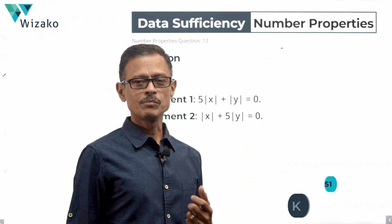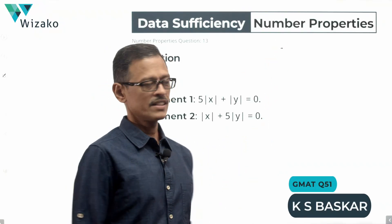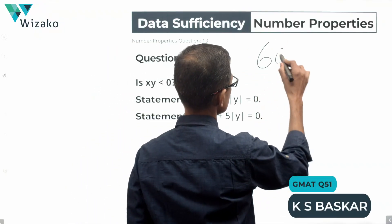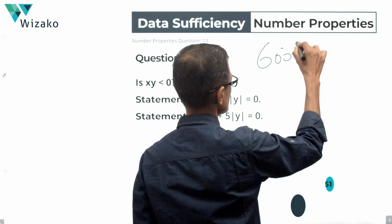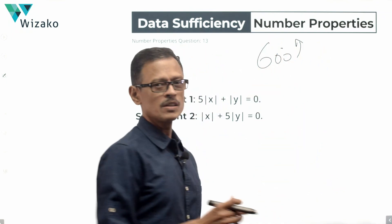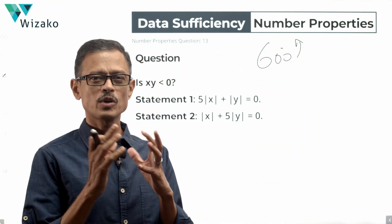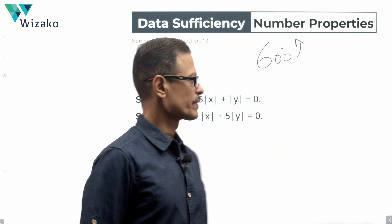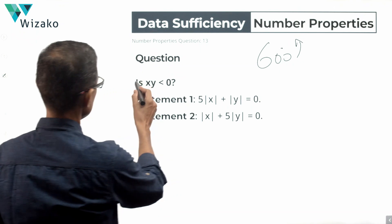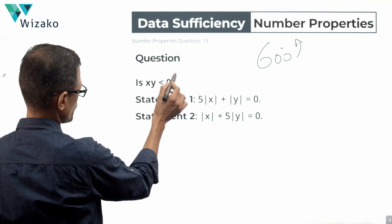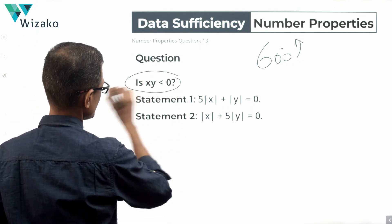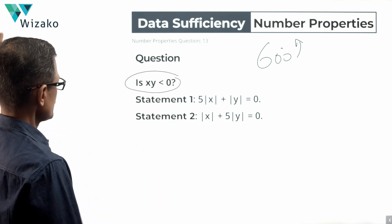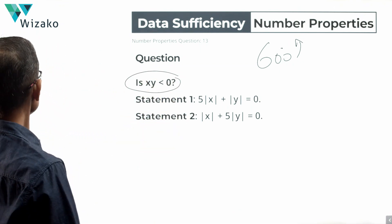This is an easy GMAT Data Sufficiency number properties question, classified as a GMAT 600 level question. The concept tested is properties of absolute values of numbers. The question asks: is the product XY less than 0? Let's look at the statements in a while.